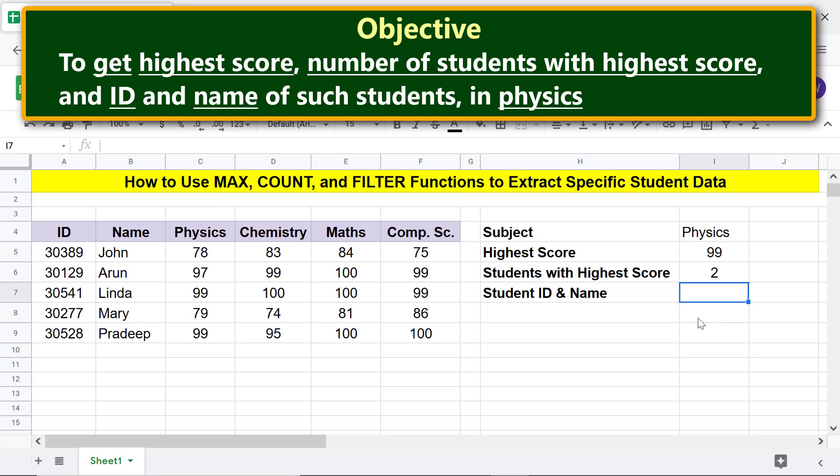To get the ID and name of students with the highest score, we will use the FILTER function. Type equals F-I-L and select FILTER. For range, select this area. We are selecting this area because we want the student ID and name of those students with the highest score in physics.